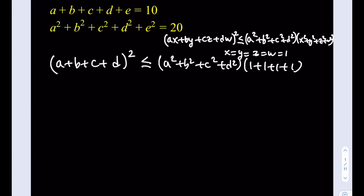Now, this is equal to four, so we got a nice inequality. Let's rewrite it. A plus b plus c plus d quantity squared is less than or equal to four times the quantity a squared plus b squared plus c squared plus d squared.